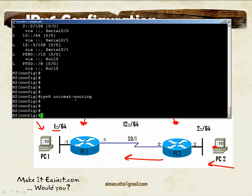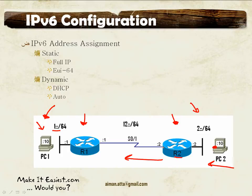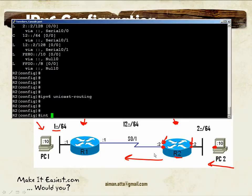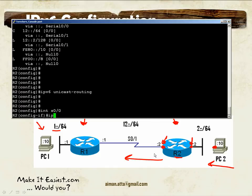We have RIPng enabled — just to verify. After that we will move to the interface. We'll go to interface serial 0.0 and configure IPv6 RIP.